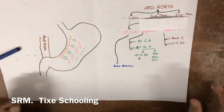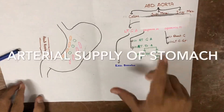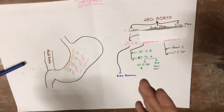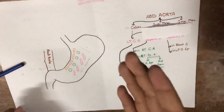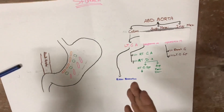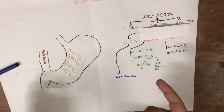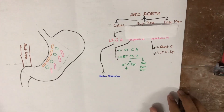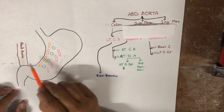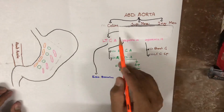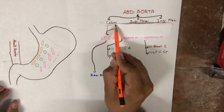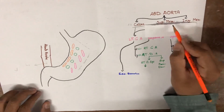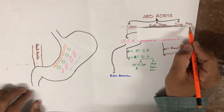Assalamu alaikum, this is SRM from Thai's Schooling, and today we are going to talk about the arterial supply of the stomach. The abdominal aorta arises at T12. When the descending aorta passes through the diaphragm, its name changes and it is called the abdominal aorta. The stomach is mainly supplied by one of the branches of the abdominal aorta called the celiac artery. The abdominal aorta has two other main branches: the superior mesenteric artery and the inferior mesenteric artery.